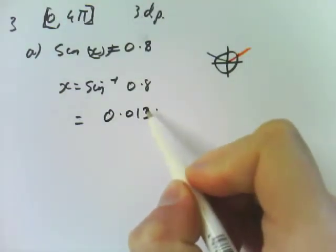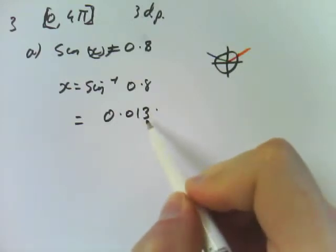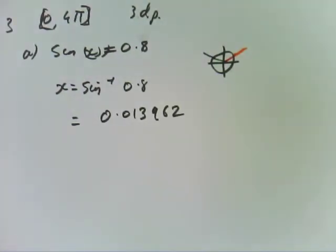You do the same process. x equals sin to the minus 1 of 0.8, which comes out at 0.013962. What does that mean? Does it mean anything? So why does it come out at that value? When the other one came out at like 30 degrees, why is it coming out at that value? Why 0.013? What's going wrong here? Did you put it in the calculator?